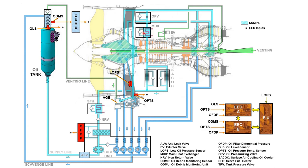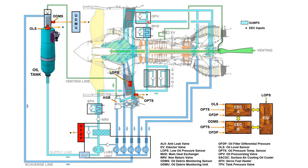After passing through the surface air cooled oil coolers, the oil goes to the main heat exchanger, where the fuel gets heated up again and the oil flows through. From the main heat exchanger, it goes to the oil pressurizing valve, which brings the oil to the optimum pressure to be distributed to the required areas.